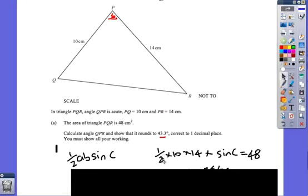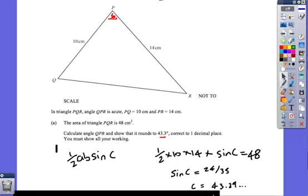So therefore, the angle, it's going to be half times by, it's the two sides that enclose the angle. So half times 10 times 14 times sine of this angle is equal to 48. If I stick all that in the calculator, I'm going to get sine C is equal to 24 over 35. Therefore, C is 43.29. That does round to 43.3. Remember, C in this case here is angle QPR.